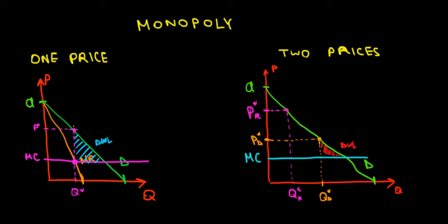Suppose we did not charge as a monopolist — suppose we charged where the price function equals marginal cost, like in perfect competition. In that case we would sell this entire quantity, and the difference between the price and the demand function — this whole triangle — would be the consumer surplus.